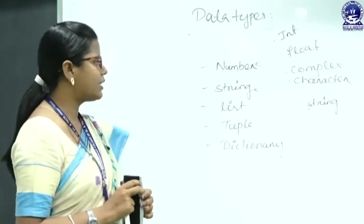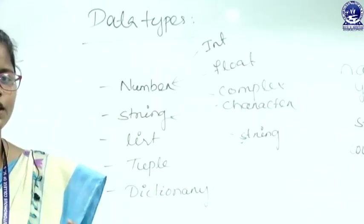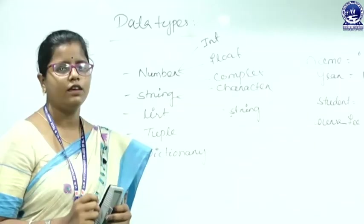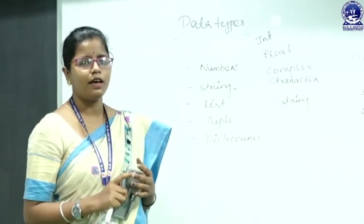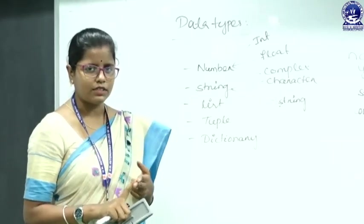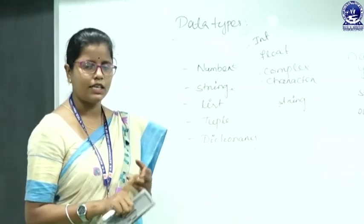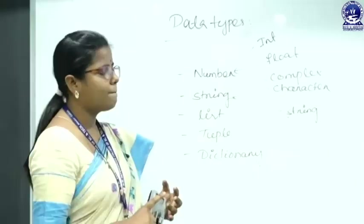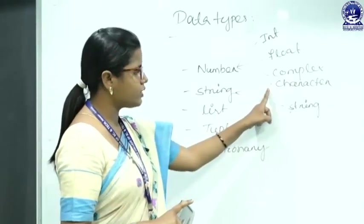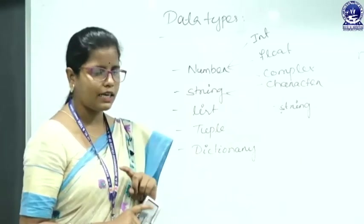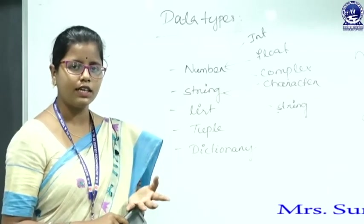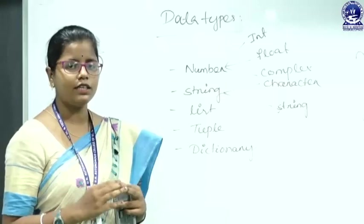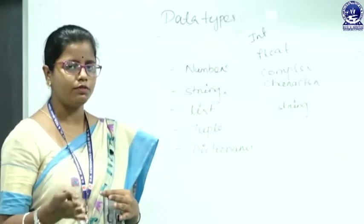In Python language there are five types of data types: number, string, list, tuple, and dictionary. In this class we are going to discuss only number and string; list, tuple, and dictionary we will cover in the next class. Under the number data type we have three different subtypes: int, float, and complex. Under string data type there are two subtypes: character (a single character) and string (a group of characters). We can represent them using single quotes, double quotes, or triple quotes — single quote for a single character, double quote for multiple characters, and triple quote for a paragraph.